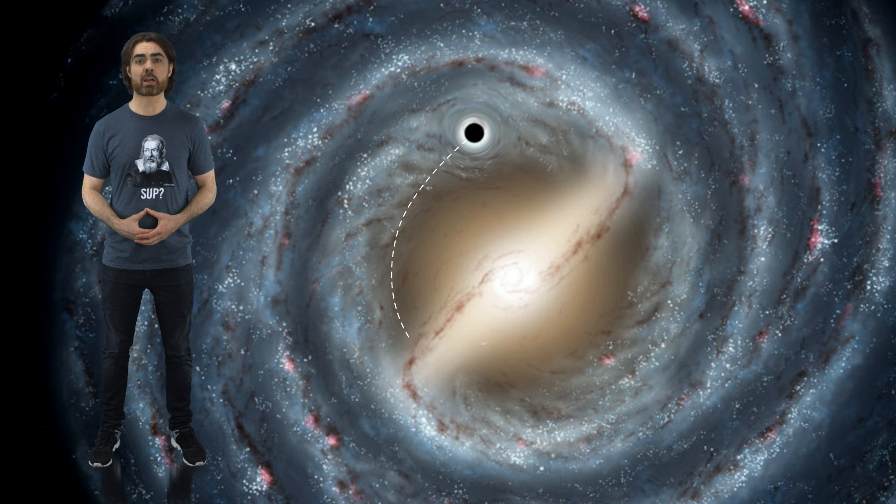The ultimate result is that the black hole slows down and no longer has the velocity it needs to maintain its circular orbit. Gradually, it falls towards the galactic center. Now, this process takes a really long time for a stellar mass black hole. Over a few billion years, we only expect the black holes from the central several light years to have made much progress inwards.